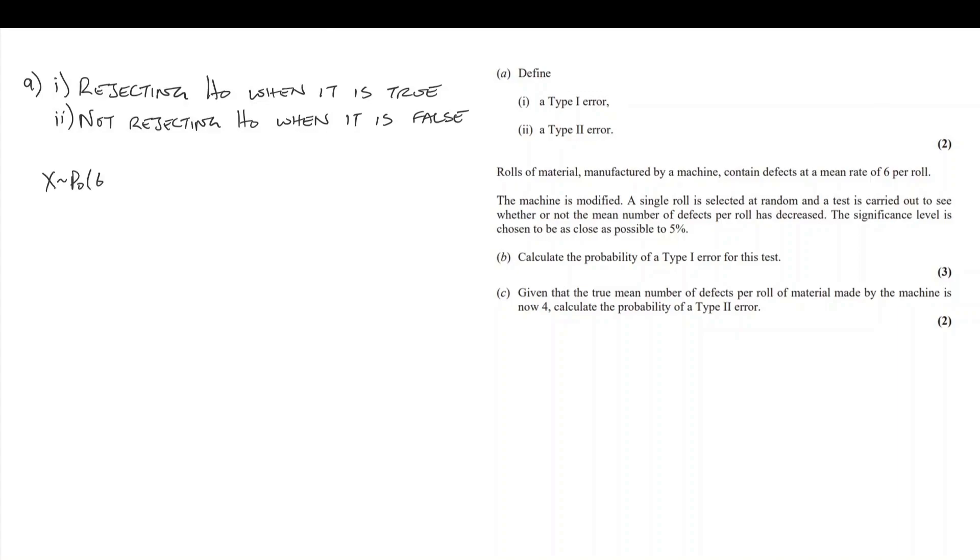Let me get the information now. We're working with a Poisson distribution where the lambda value is 6. We have a hypothesis where lambda equals 6 and an alternate hypothesis where lambda is less than 6. What would this look like on a diagram?